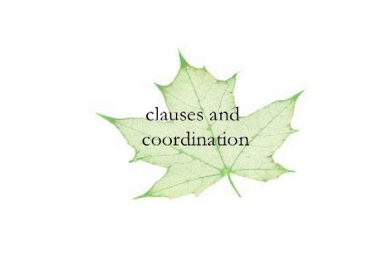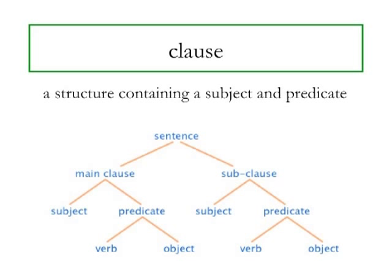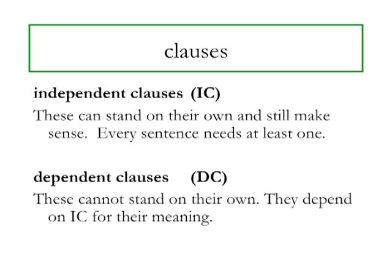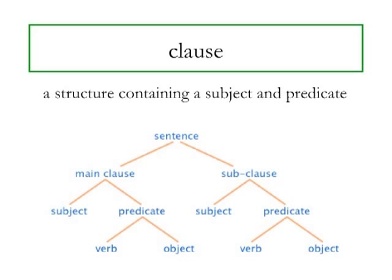A clause is a structure containing a subject and a predicate pair. Sound familiar? This is how we talked about sentences in the first lesson — a sentence needs a subject and a predicate pair. So what's the difference between clauses and sentences? The difference is that you can have more than one clause in a sentence, but you cannot have more than one sentence in a clause. Clauses can sometimes share a sentence as equals, but just as often one clause takes center stage and the other clauses hang on to it.